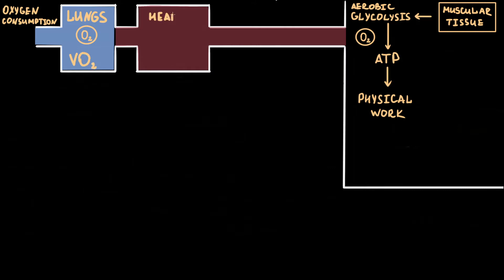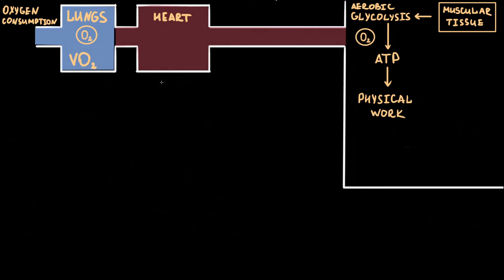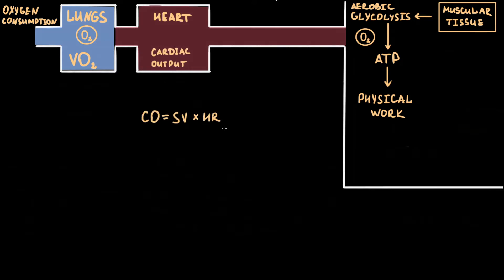Oxygen uptaken by the lungs should be delivered by the cardiovascular system to muscular tissue. For estimating this process, we use cardiac output, which in turn depends on heart rate and stroke volume.